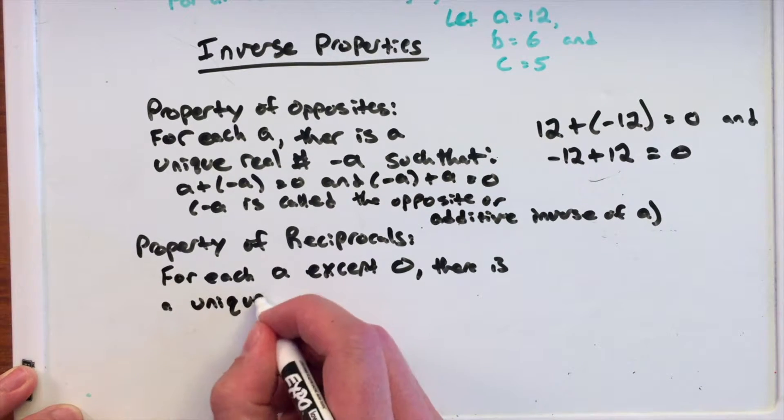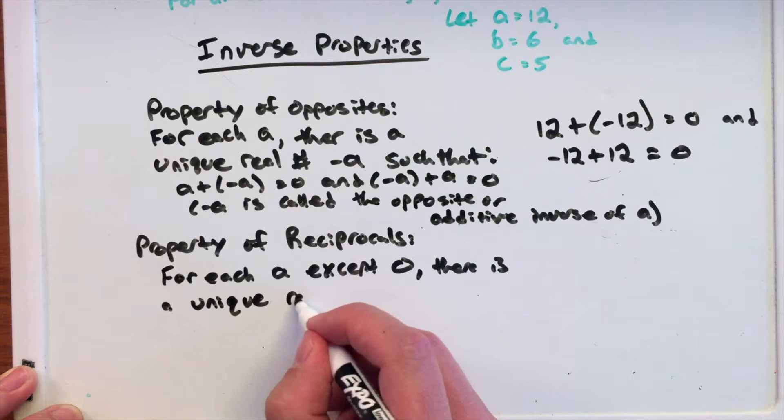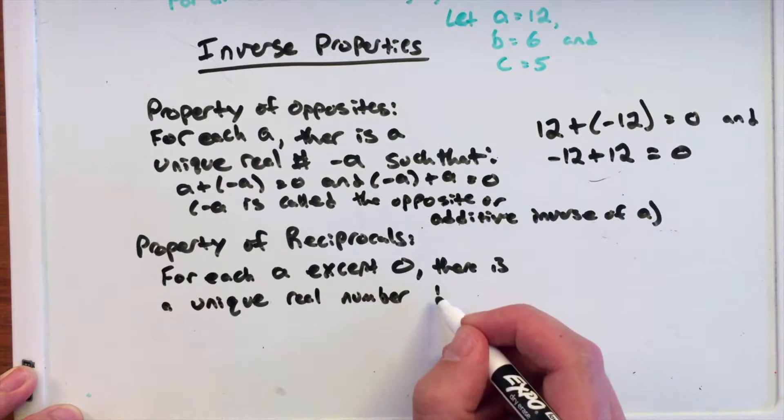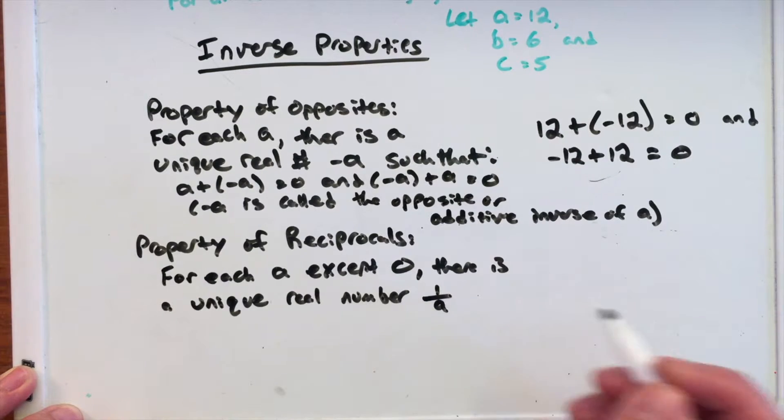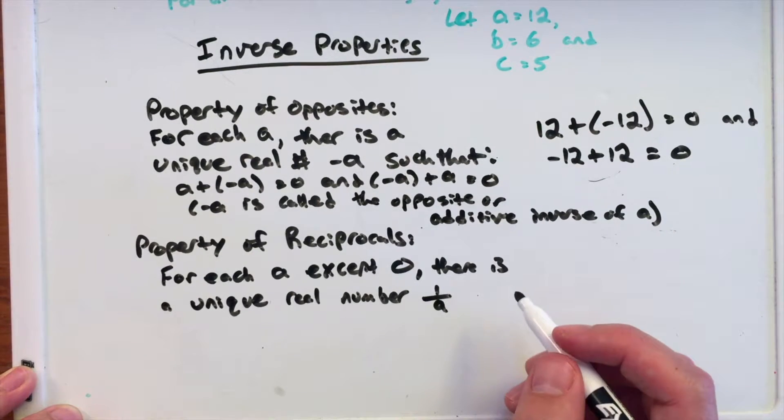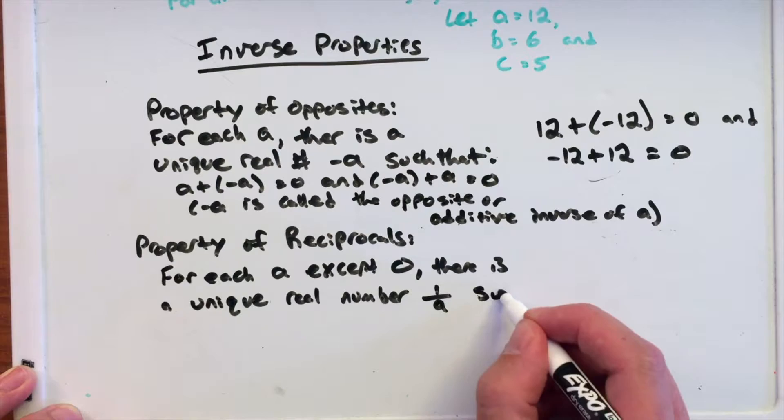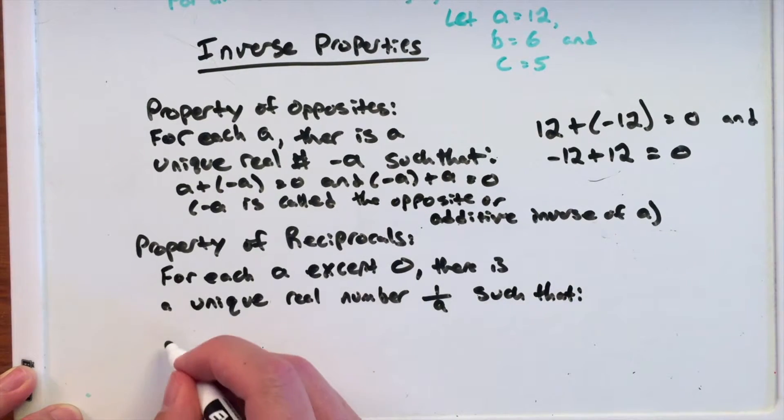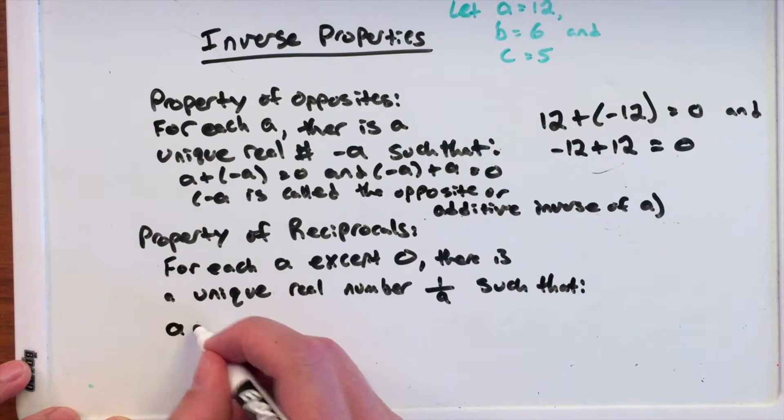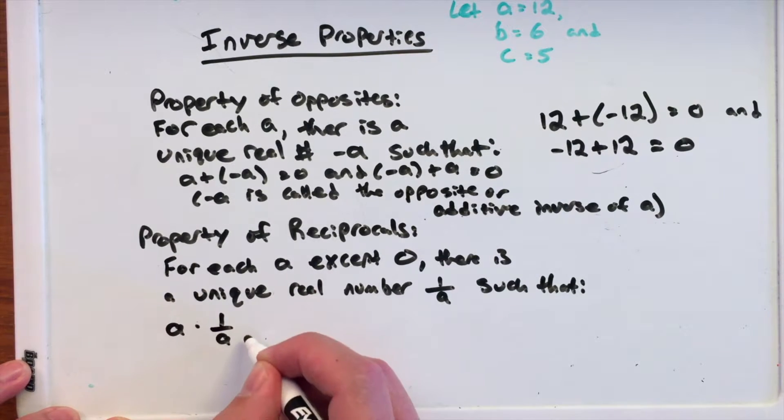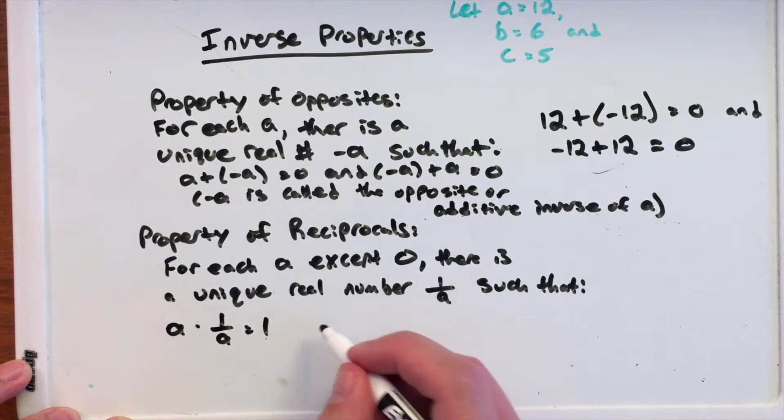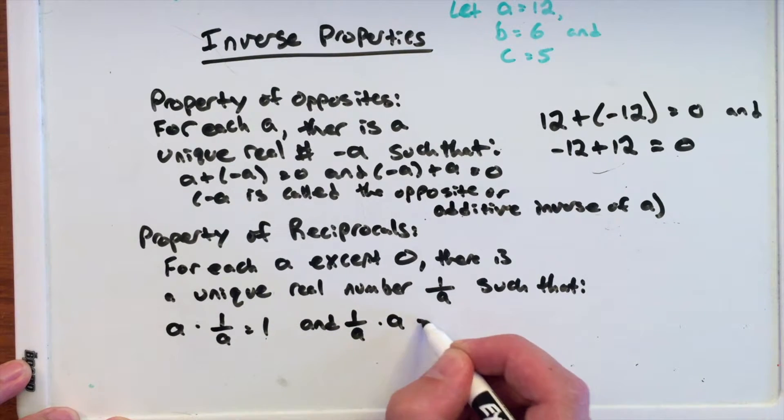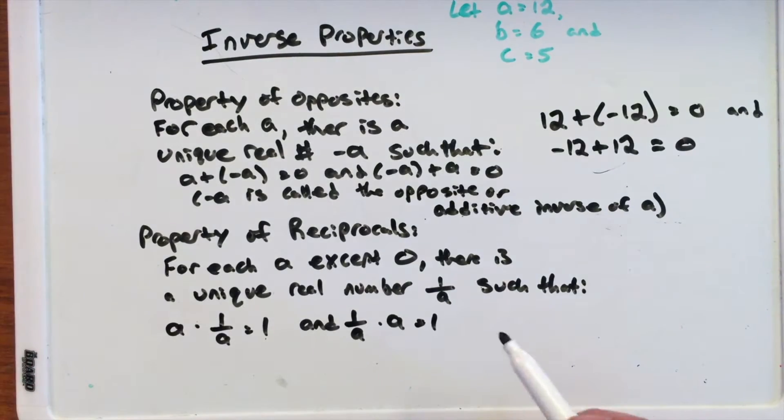1 over A, making a little fraction here, such that A times 1 over A equals 1, and 1 over A times A equals 1, meaning they'll cancel them out.